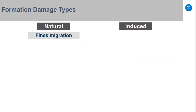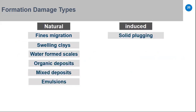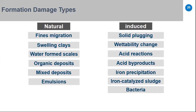Formation damage types fall into two categories: natural and induced. Natural types include fine migration, swelling clay, water-formed scale, organic deposits (asphaltene, paraffin), mixed organic and inorganic deposits, and emulsion. Induced types include solid plugging, wettability change from oil-based mud invasion, acid reaction byproducts, iron precipitation, sludge catalyzed by iron and bacteria, and water blocks.